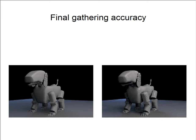As we mentioned, the final gathering accuracy and radius really go hand in hand. The image on the left, we've got a large radius and a low accuracy. Because the radius is so large and the environment isn't complicated, we end up getting a smooth effect and a general indirect illumination look, because we're not sampling the environment very often for final gathering.